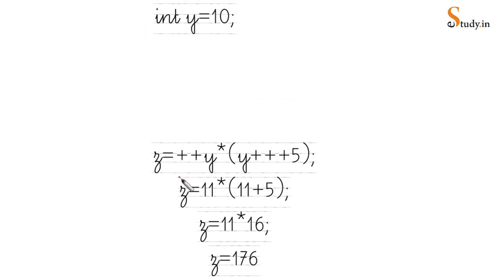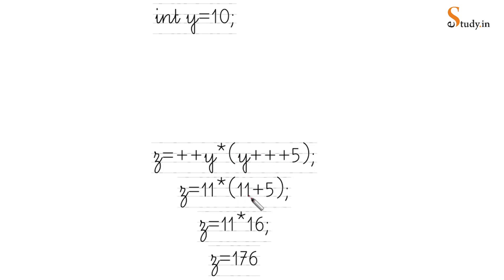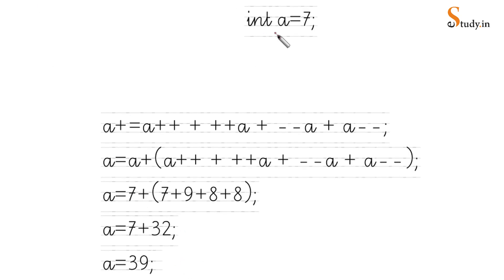Next example: y = 10. The expression is z = ++y * (y++ + 5), where the brackets are given. Since ++y is pre-increment, increase y from 10 to 11 and use 11. Inside the bracket, y++ is post-increment so use 11, plus 5 = 16. So z = 11 * 16 = 176. The answer is 176.